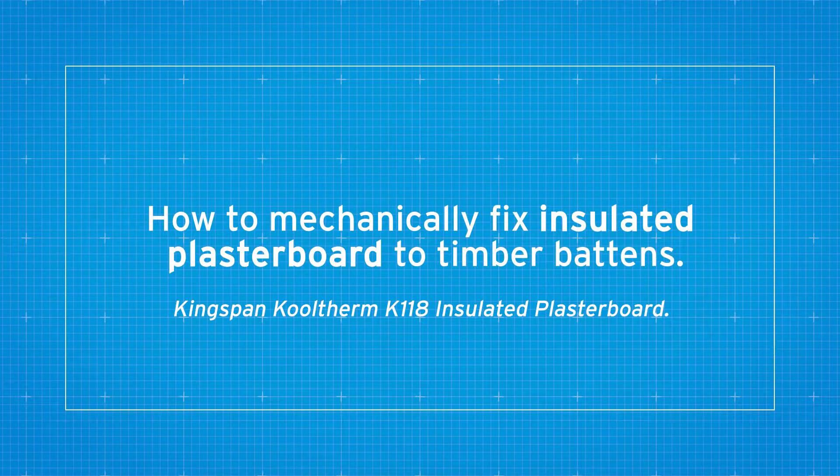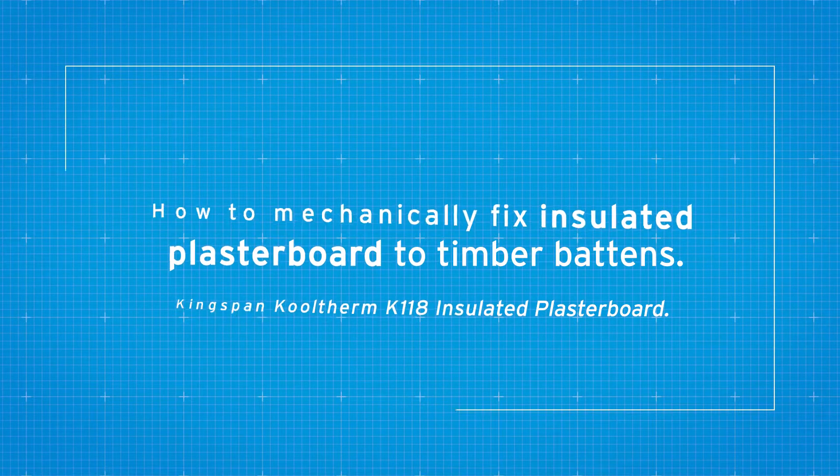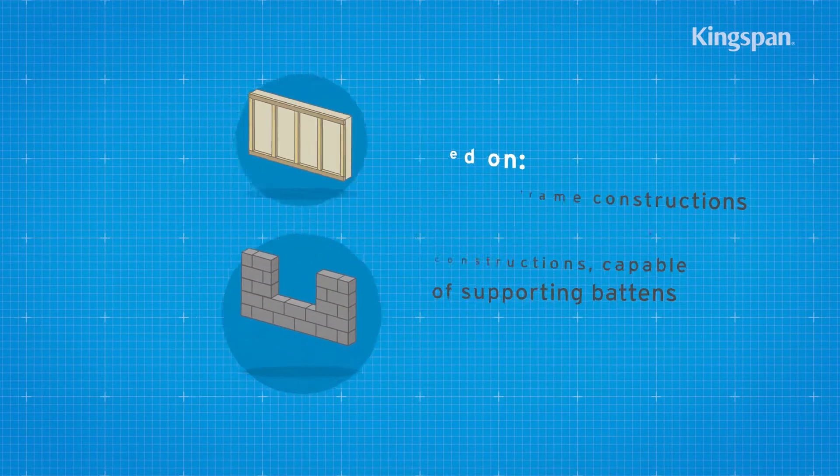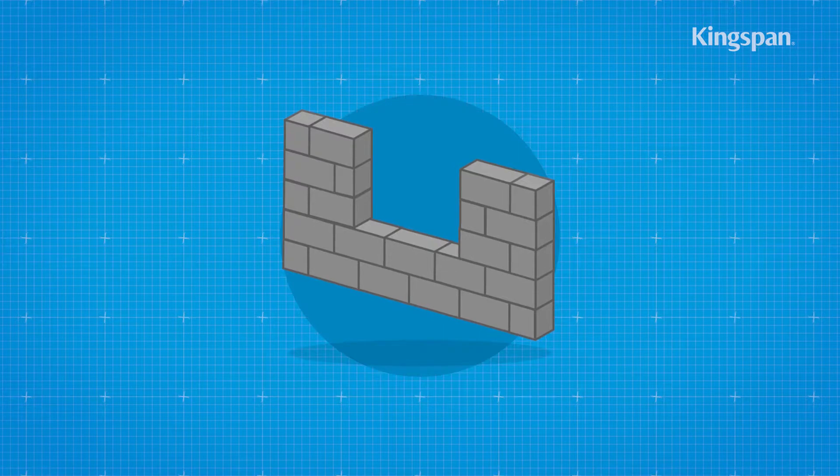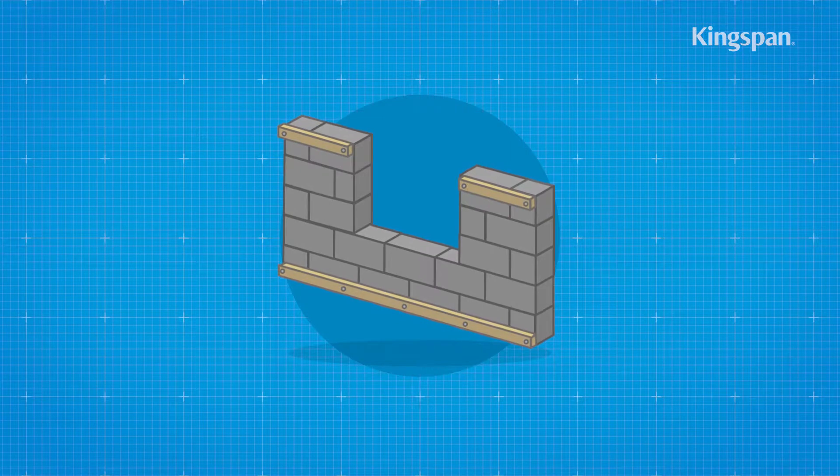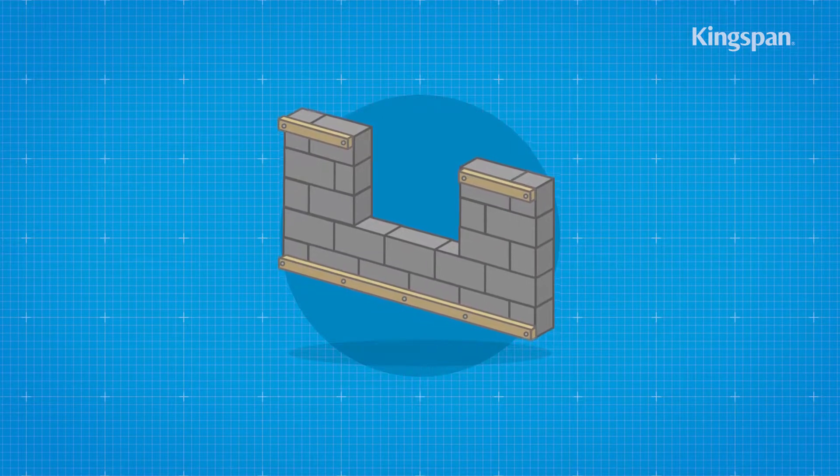How to mechanically fix insulated plasterboard. If insulating a construction other than timber frame, mechanically fix timber battens at the floor and ceiling around the room's perimeter.